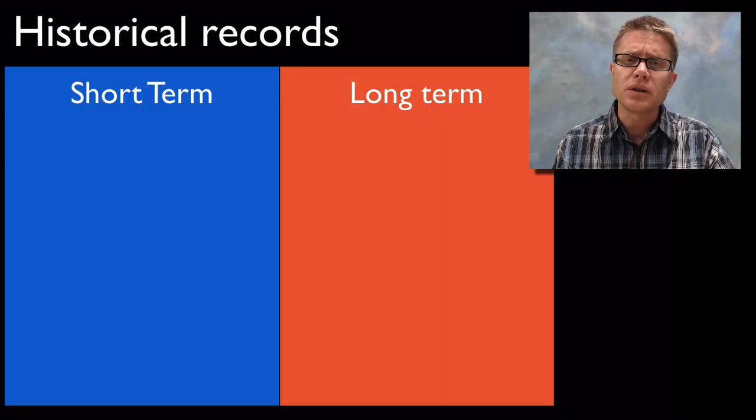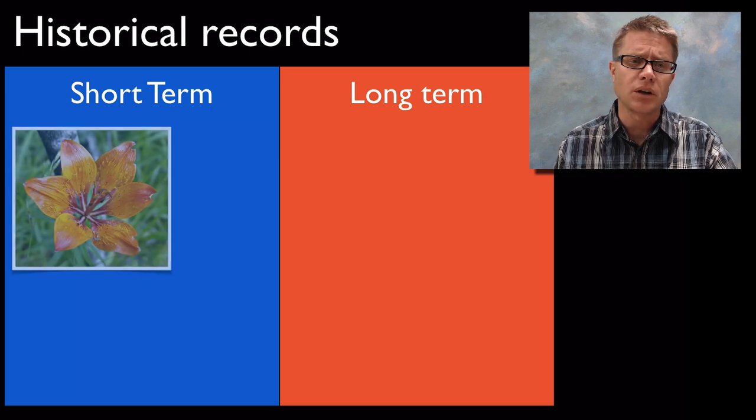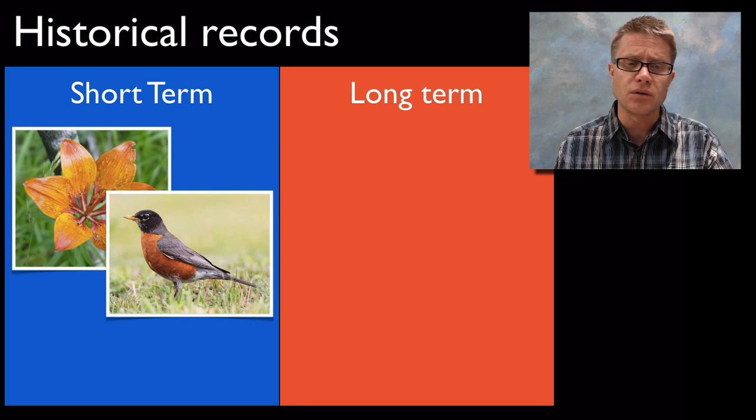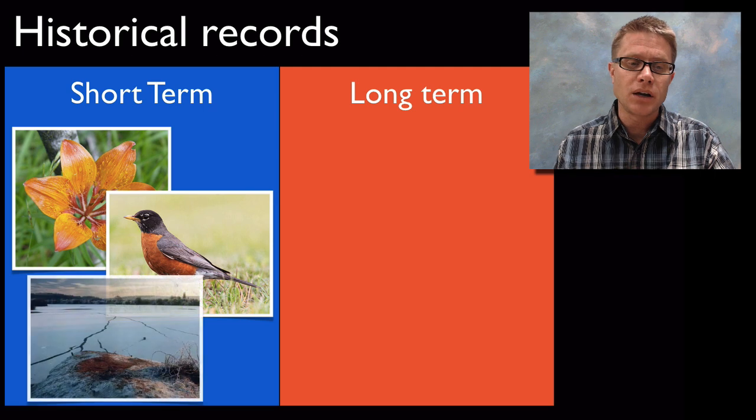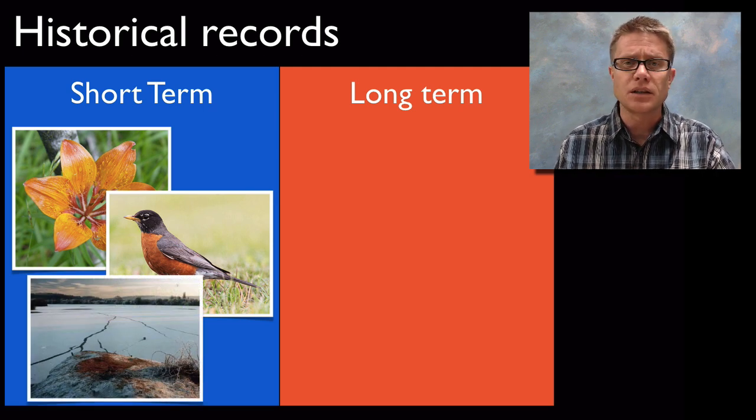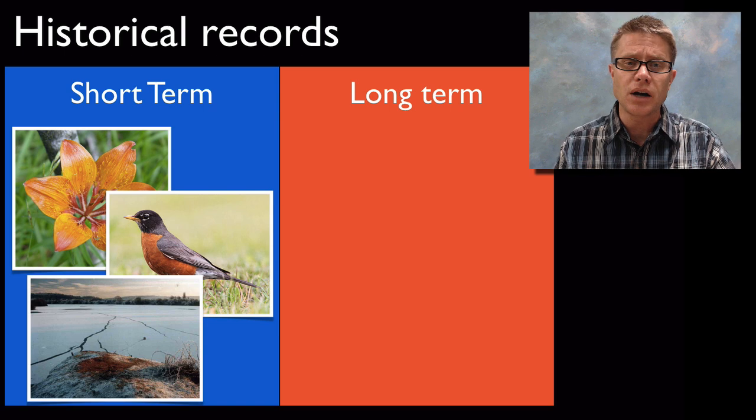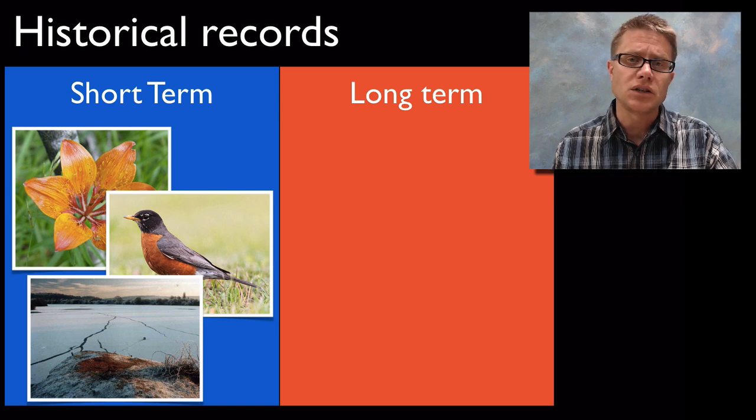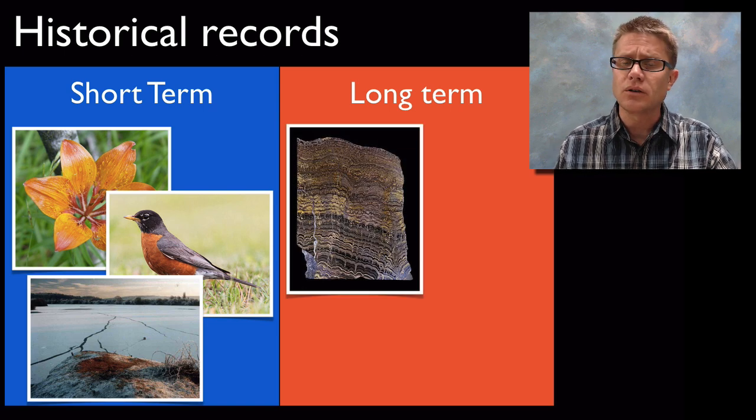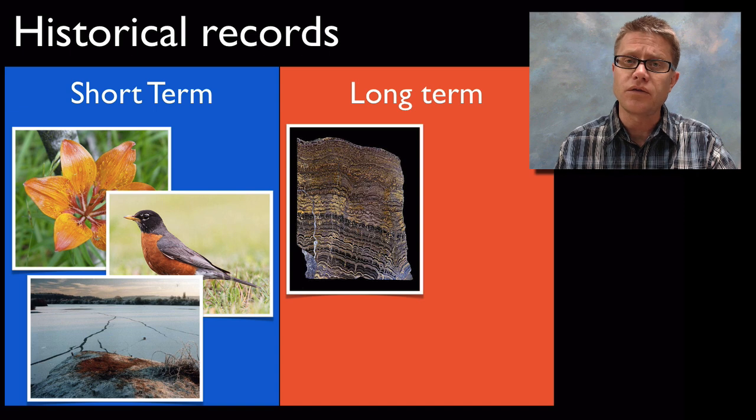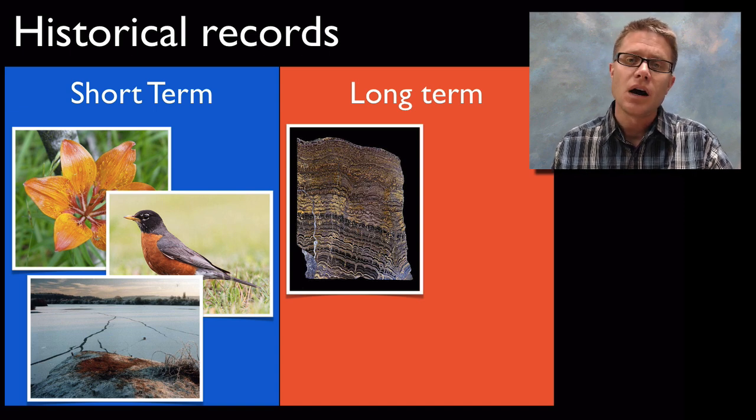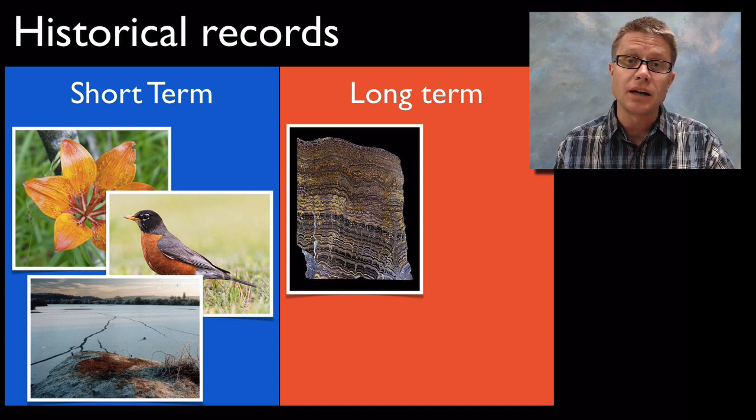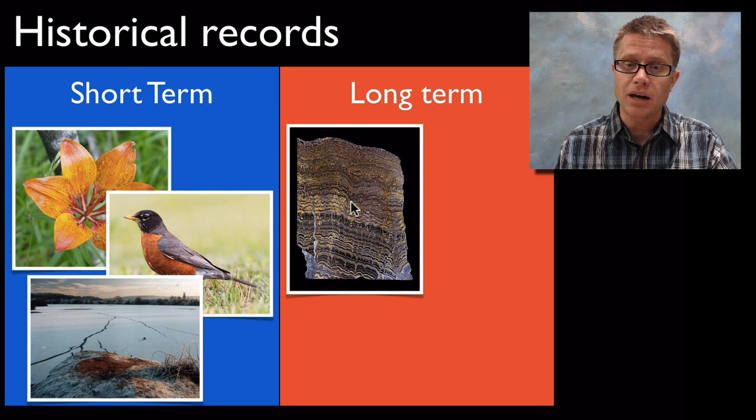How do we know that the climate is changing? We have written record, historical evidence that it's changing. If we look at when the flowers are flowering and when the birds are migrating, when the ice is forming on lakes and coming off the lakes, and if we look at the ice pack, we can see how it's changing over time. We can also look at how it's changing long term. We can look in the fossil record and see what the climate was like at different times. We're looking at stromatolites here.